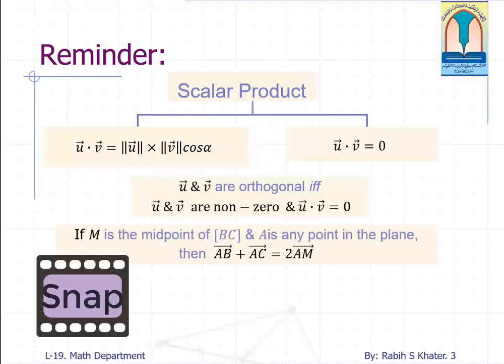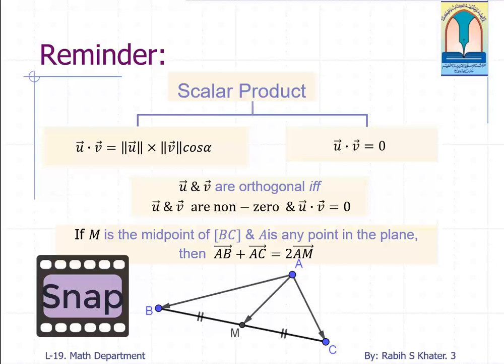Now if M is the midpoint of any segment BC and A is any point in this plane, then we can write the sum of the vectors having the same origin A: AB vector plus AC vector equals double AM vector. This is known as median and vectors.